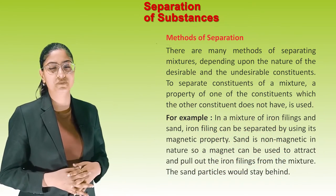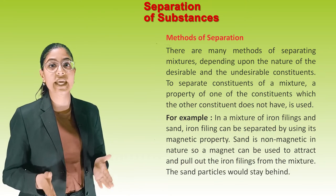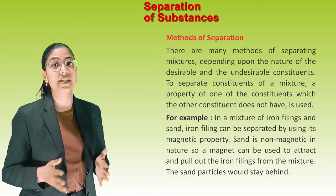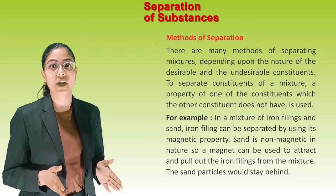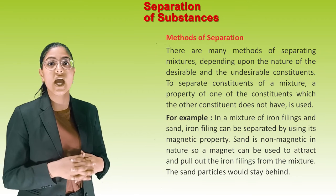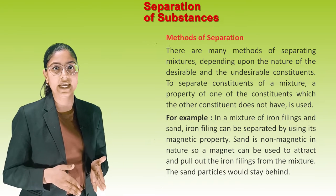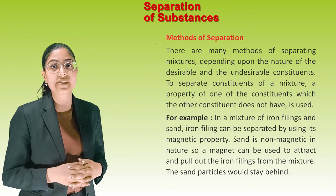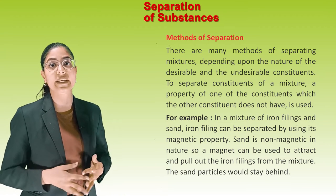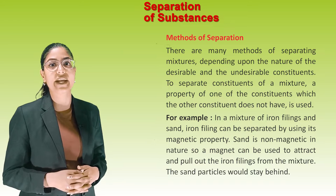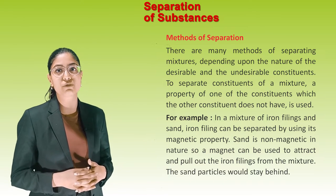Method of separation: There are many methods of separating mixtures depending upon the nature of the desirable and undesirable constituents. To separate constituents, a property of one constituent which the other does not have is used. For example, in a mixture of iron filings and sand, iron filings can be separated using their magnetic property. Sand is non-magnetic, so a magnet can be used to attract and pull out the iron filings from the mixture, while the sand particles stay behind.